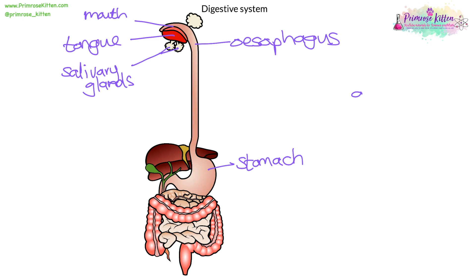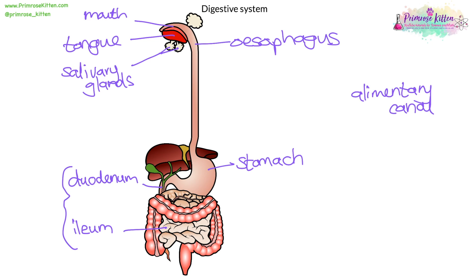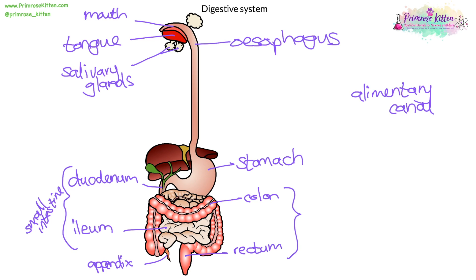Now I'm going to trace the alimentary canal — basically a fancy way of saying the tube the food flows through. It goes through the mouth, down the esophagus, into the stomach. This part over here is the duodenum, and then from the duodenum it goes into the ileum. These two together are the small intestine. From the ileum, it traces along past the appendix until the food ends up in the colon, then through to the rectum. These two together are the large intestine, and the food exits through the anus.